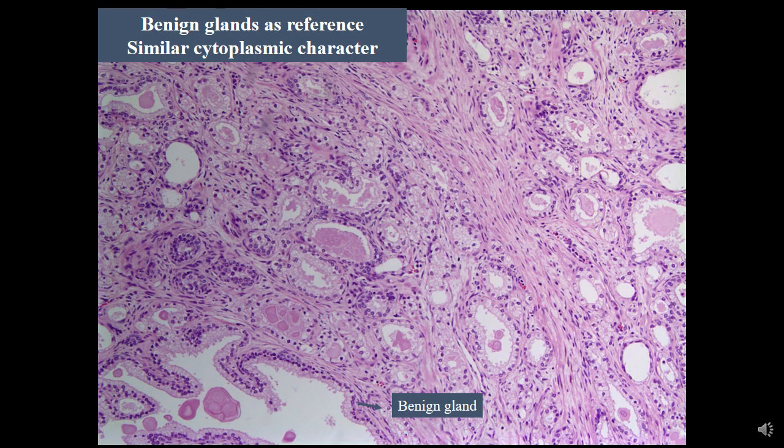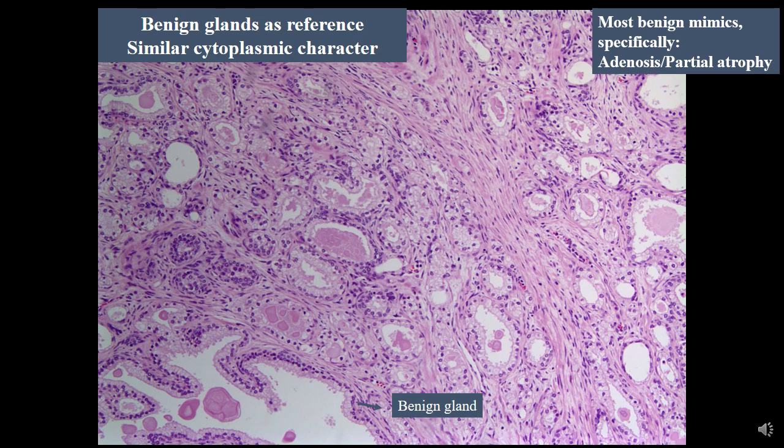The next important feature is to pay careful attention to adjacent benign glands as a reference point. When you have a small glandular proliferation — glands in question that can give an atypical presentation — and these small atypical glands have essentially similar cytological and cytoplasmic characteristics to adjacent benign glands, it usually suggests a benign lesion. Here is a nice example of adenosis, also referred to as atypical adenomatous hyperplasia, where the small glands have similar cytoplasmic and cytological characteristics to the adjacent benign glands, pointing towards a benign diagnosis.